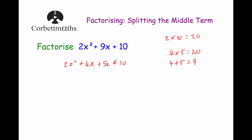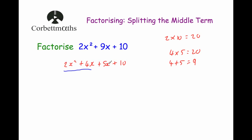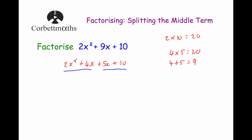We've just split up the middle term. Now we're going to look for common factors on the first half of that expression — the first two terms, the 2x squared plus 4x. Looking at the common factors of the first half: x is a common factor and 2 is also a common factor, so we can factorise by taking 2x out, which leaves us with x plus 2.